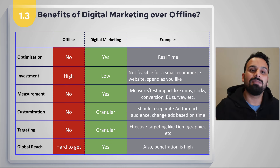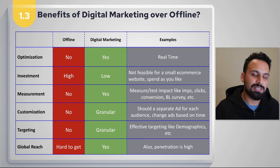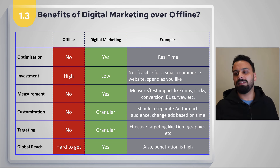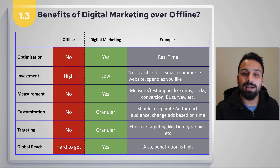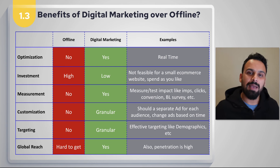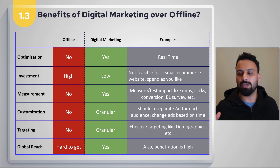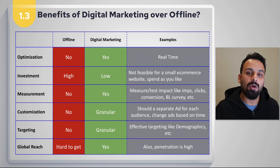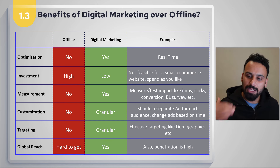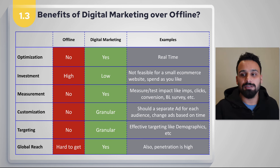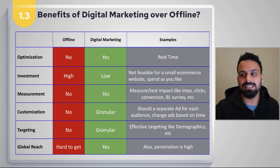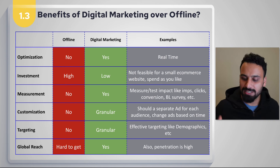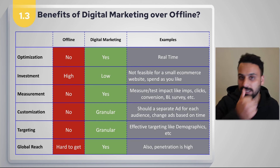With digital marketing, if a campaign isn't working, you can optimize it — change the creative, change the targeting, and much more. You can literally run a campaign for two hours, see if it's delivering results, make changes, and within two hours see the impact of those changes. You can make it work through different tests and adjustments in near real-time.